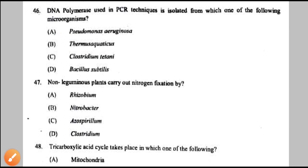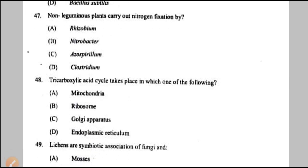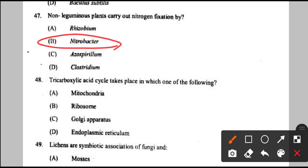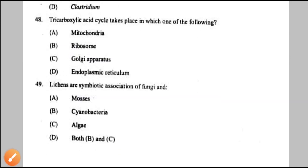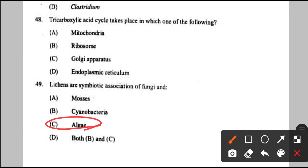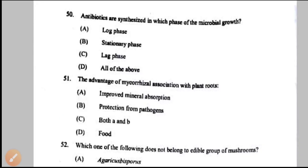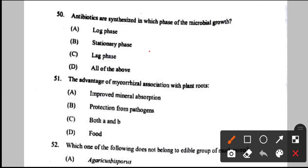Question number 47: non-leguminous plants carry out nitrogen fixation by — Nitrobacter — they take help of Nitrobacter. Question number 48: tricarboxylic acid cycle takes place in — the mitochondria. Question number 49: lichens are symbiotic association of fungi and — algae. Lichen = algae + fungi. Not cyanobacteria, not blue-green algae — simply algae. Question number 50: antibiotics are synthesized in which phase of microbial growth — stationary phase — option B.